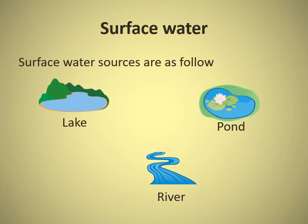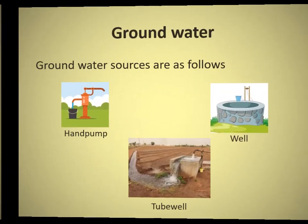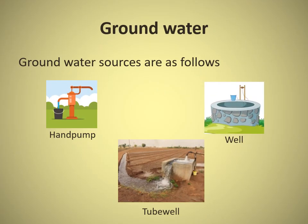Surface water sources are as follows: lake, pond, and river. Ground water sources are as follows: well, hand pump, and tube well.